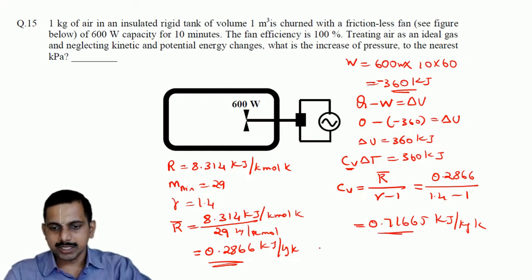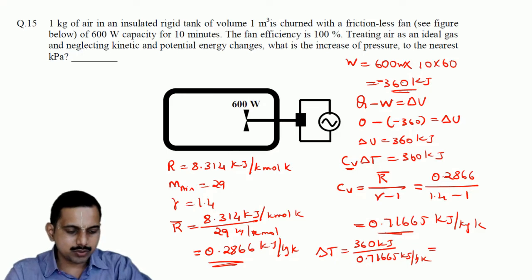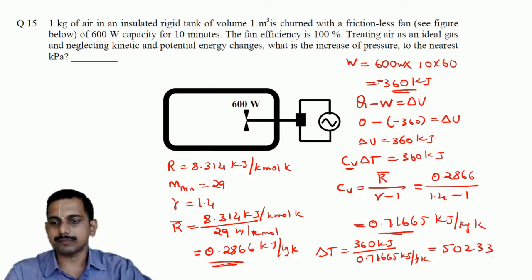From this, delta T equals 360 kJ divided by Cv. Cv is 0.71665 kJ/kg. From this we can get delta T because it is 1 kg. I got delta T as 502.33 K.